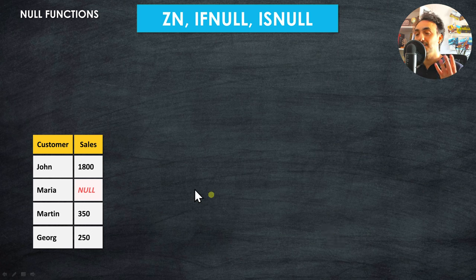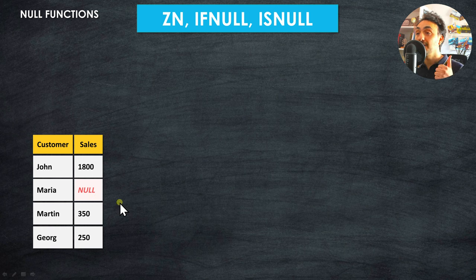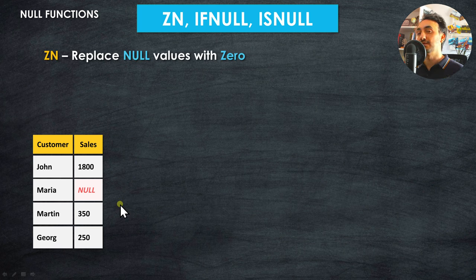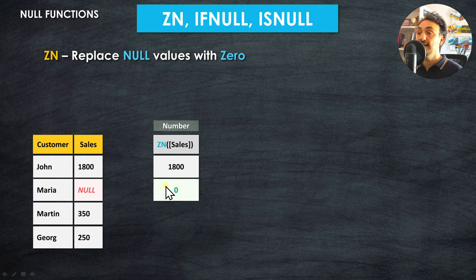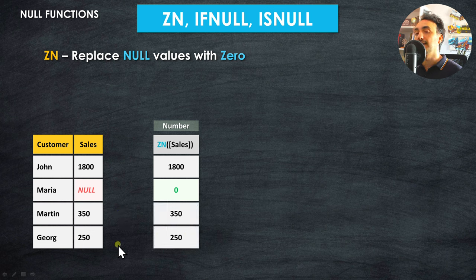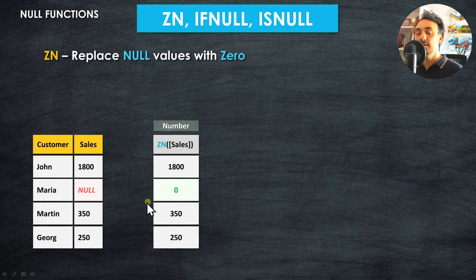We'll use four customers and their sales as an example. Only Maria has a missing value — a null — in sales. The first function is ZN, which stands for Zero Nulls. It replaces null values with zero. For non-null values it returns the same value, and for the null it automatically substitutes zero.